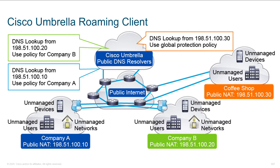Cisco Umbrella supports what we call a roaming client, and depending on how you've got it configured to operate, you're going to be able to interact with your clients in different ways. In this scenario, we've got effectively three different users: Company A in the blue, Company B in the green, and another user located at a coffee shop.